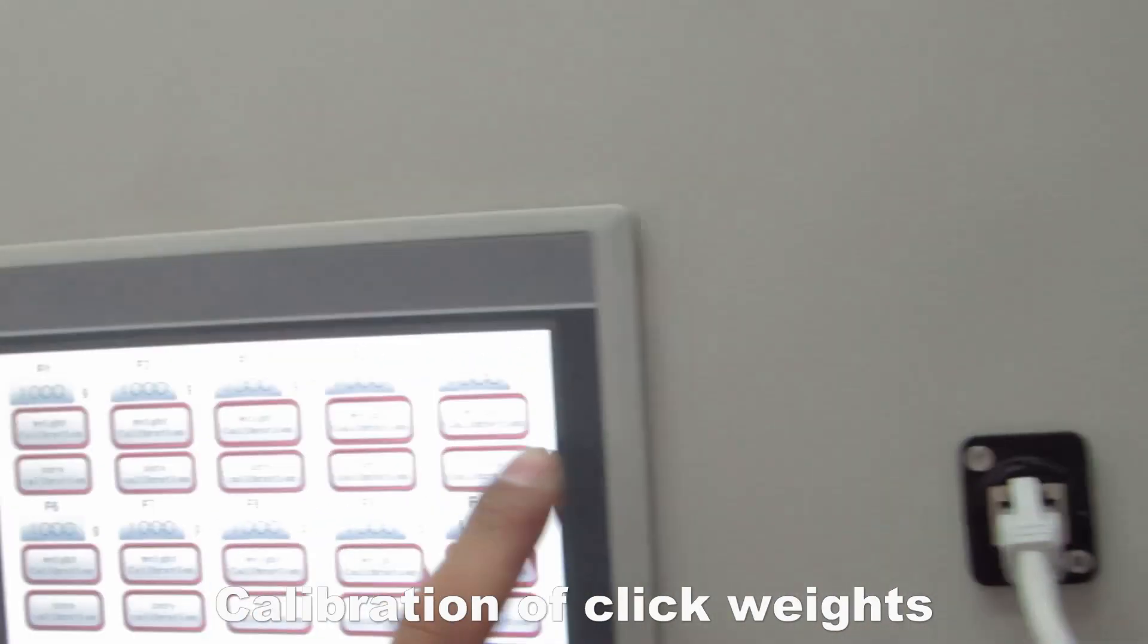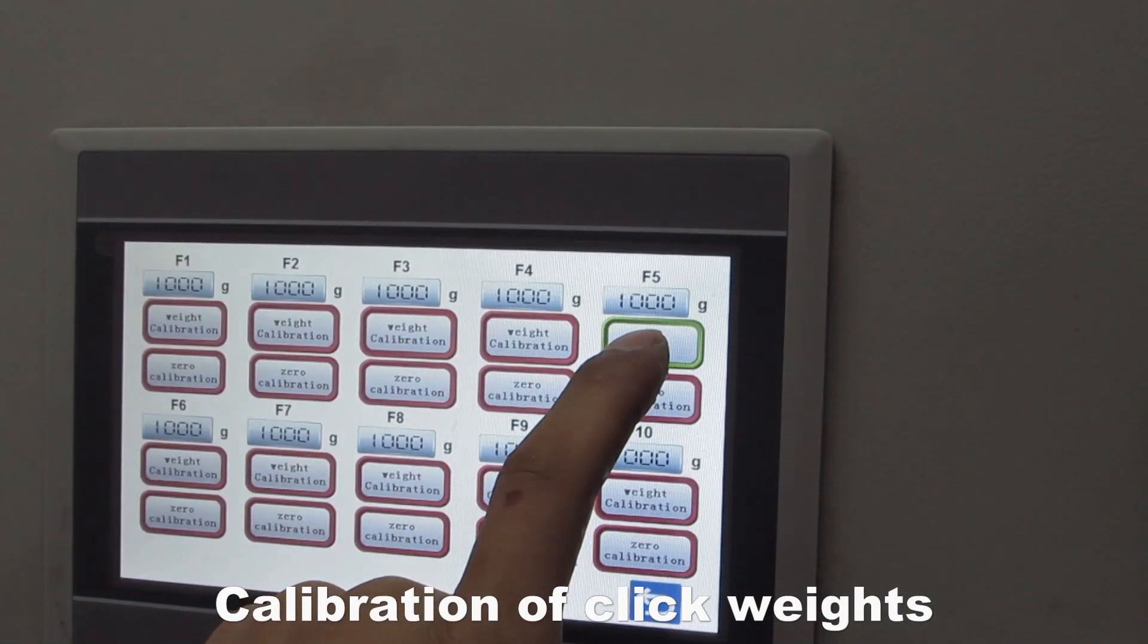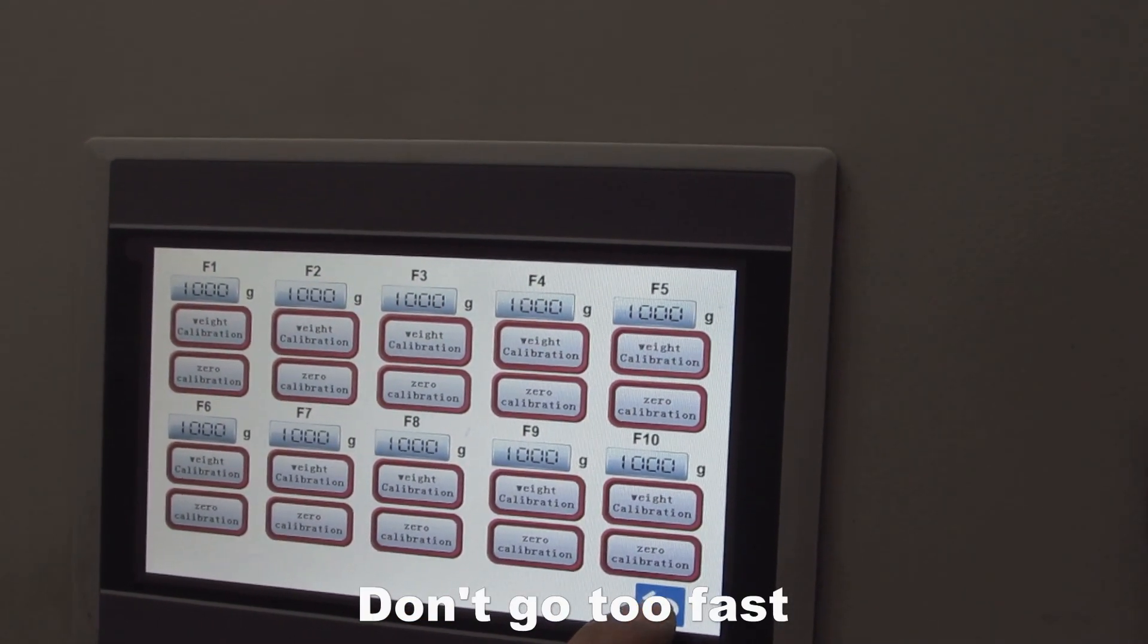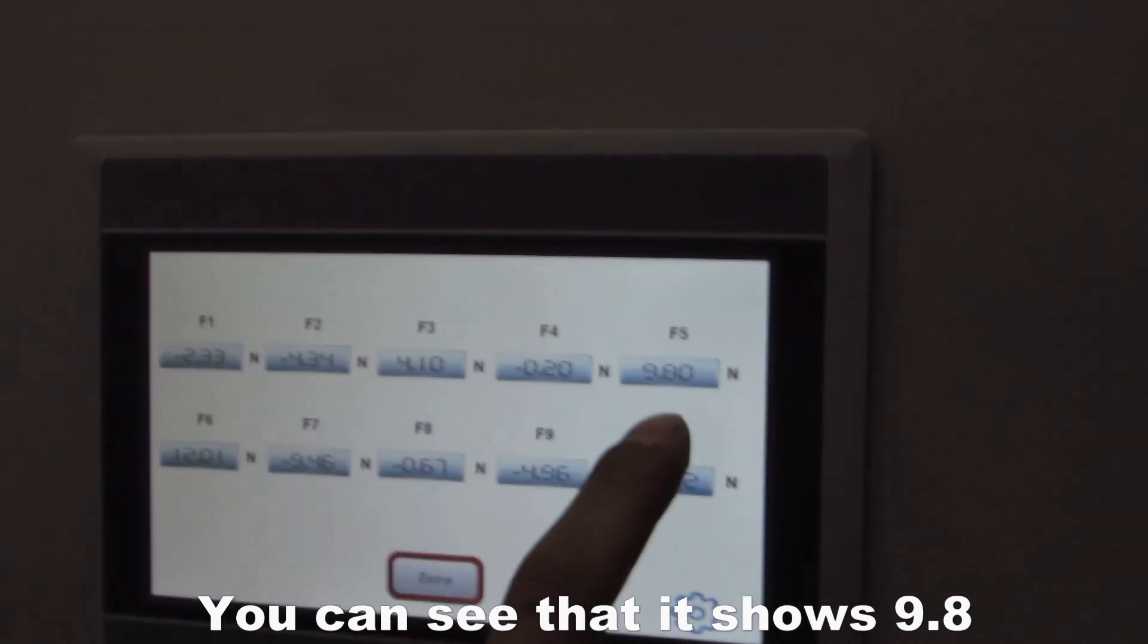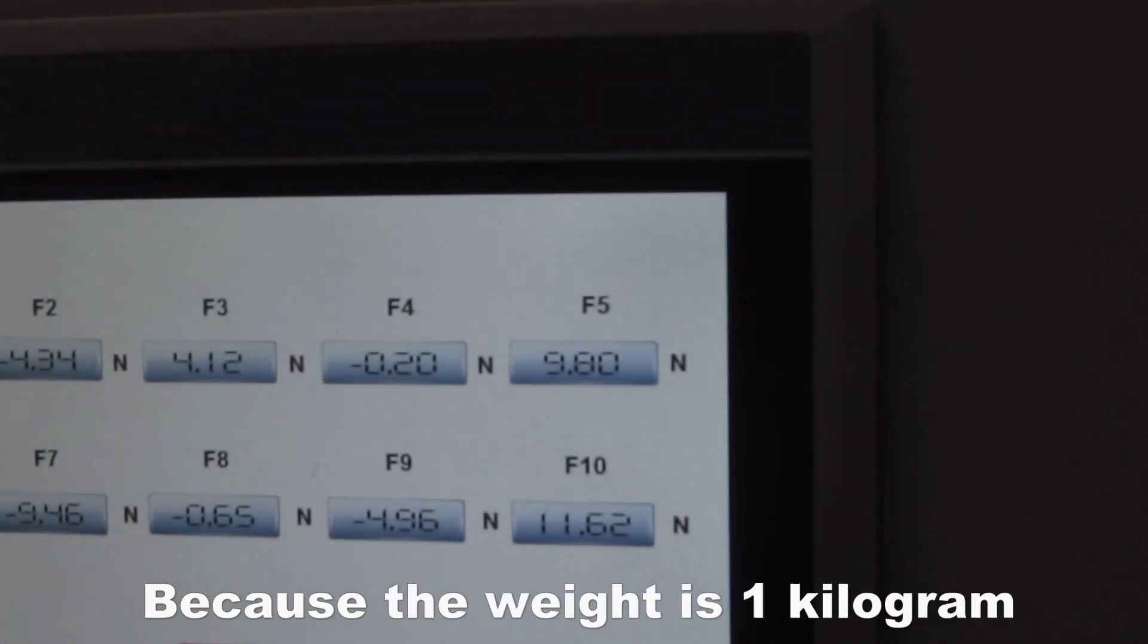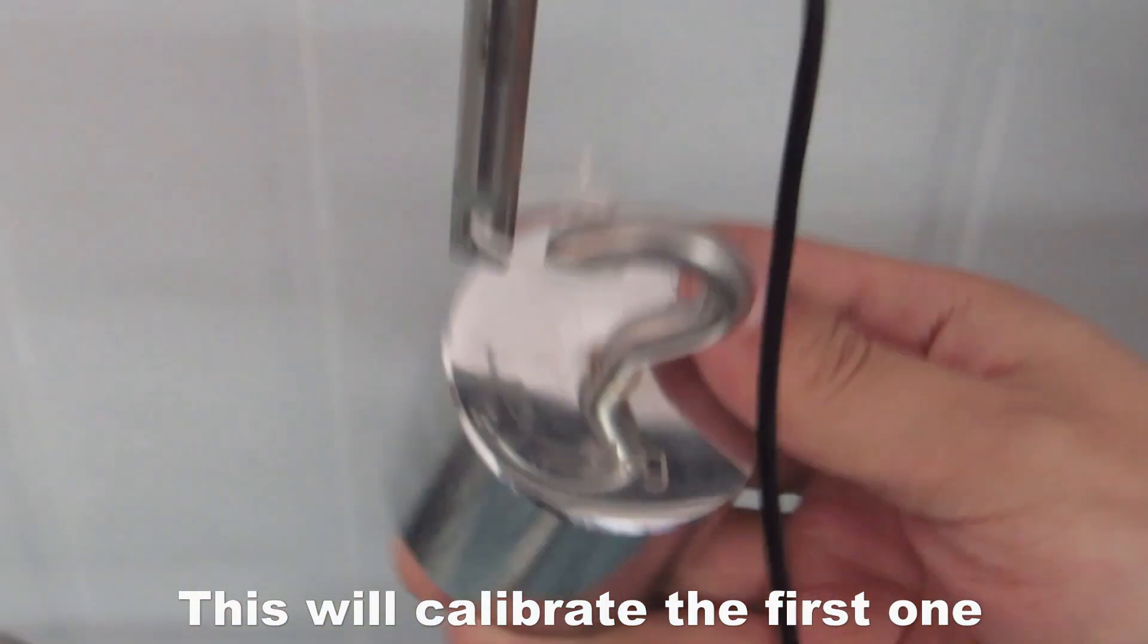Click weight calibration. Don't go too fast. You can see that it shows 9.8, because the weight is 1 kilogram, that should be 9.8 newton. This will calibrate the first one.